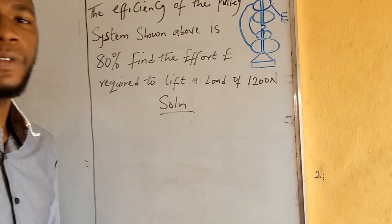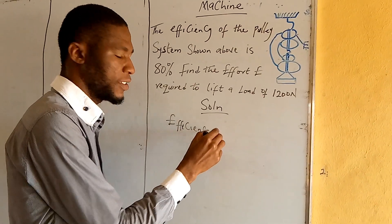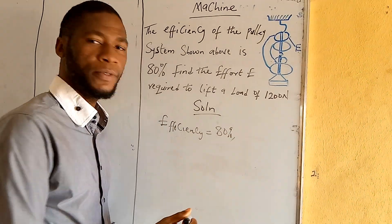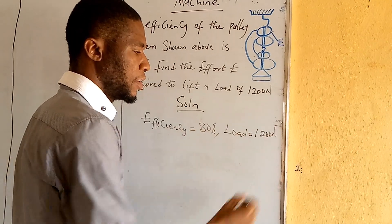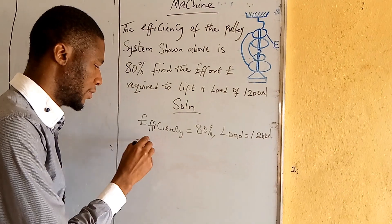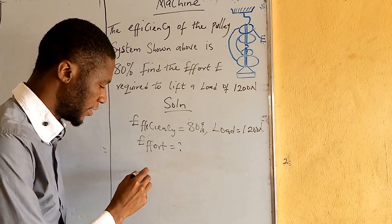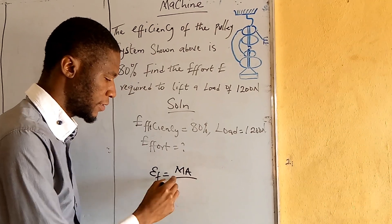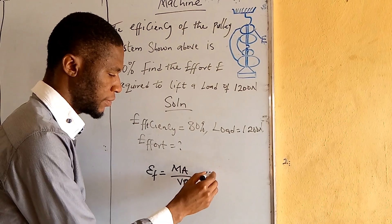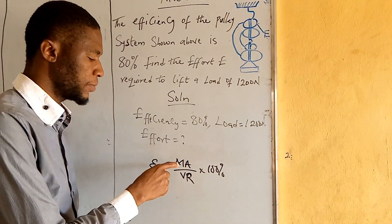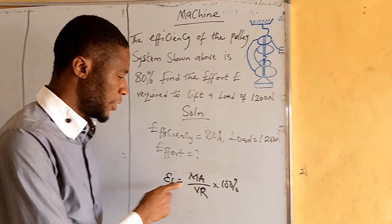In calculating this, let's bring down our values. We have the efficiency, which is equal to 80%. We have the load, which is 1,200 Newton. We want to find the effort, which is not given. We remember that efficiency is related to mechanical advantage.